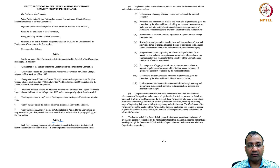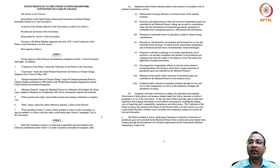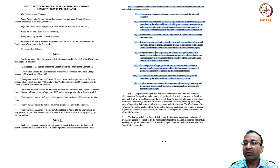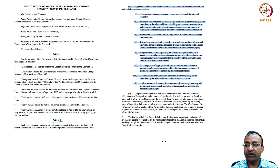Article 2 says: each party included in Annex 1, in achieving its quantified emission limitation and reduction commitments under Article 3 in order to promote sustainable development, shall implement and/or further elaborate policies and measures in accordance with national circumstances, such as enhancement of energy efficiency, protection and enhancement of sinks and reservoirs of greenhouse gases not controlled by the Montreal Protocol, promotion of sustainable forms of agriculture, research and development and increased use of new renewable energy forms, progressive reduction or phasing out of market imperfections, encouragement of appropriate reforms in relevant sectors, measures to limit or reduce emissions of GHGs, and limitations or reduction of methane emissions through recovery and use in waste management.